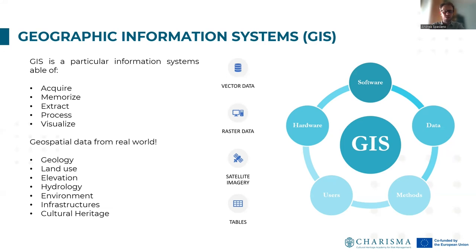GIS can manage several sources of data, such as vector data, raster data, satellite imagery, or tables such as Excel tables or CSV. A GIS consists of user, software, hardware, procedures and methods applied to the study and analysis of natural and urban ecosystems of all kinds, and for the sharing and use of geographic information for decision-making processes. So GIS is not only software, but a system that coordinates all these components.